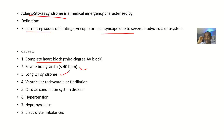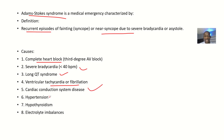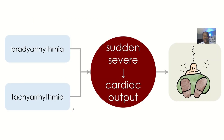There's also long QT syndrome, then ventricular tachycardia or fibrillation — where the ventricles are beating very fast. Additionally, there's cardiac conduction system disease, hypertension, hypothyroidism, and electrolyte imbalances. All of these come together to define what is known as Adams-Stokes syndrome.